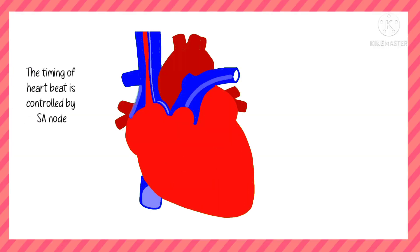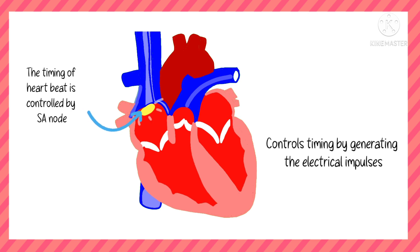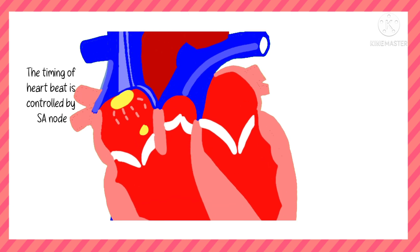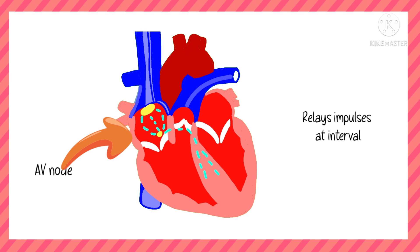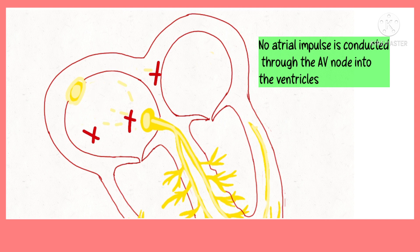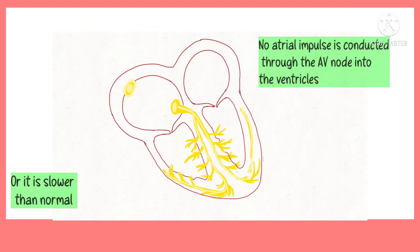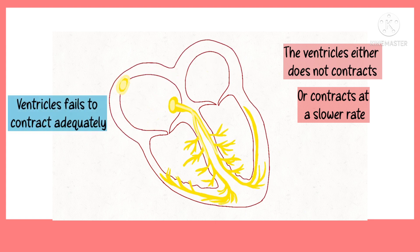The timing of the heartbeat is generated by the sinoatrial node, which is present in the right atrium. This sinoatrial node controls the timing of the heartbeat by generating electrical impulses, which are then passed on to the AV node. The AV node acts like a relay station, which slows the electrical impulses before they are passed on towards the ventricles. In heart block, no atrial impulse is conducted through the AV node into the ventricles, or it is slower than normal. Thus, the ventricles either do not contract or contract at a rate much slower than the atria, causing inadequate blood supply to various parts of the body.